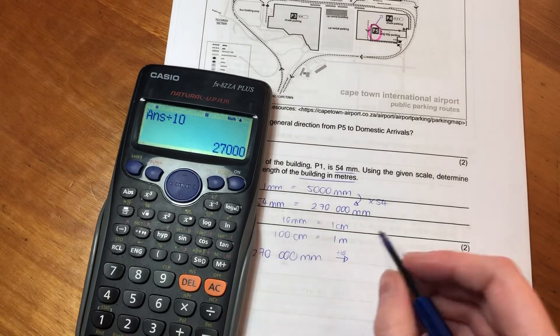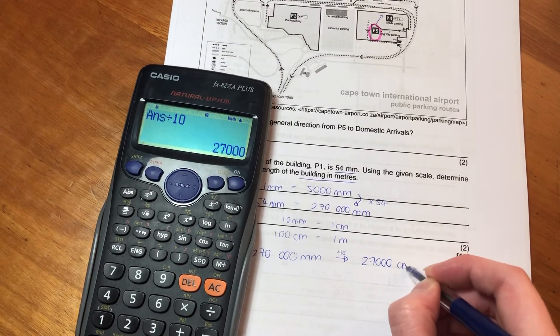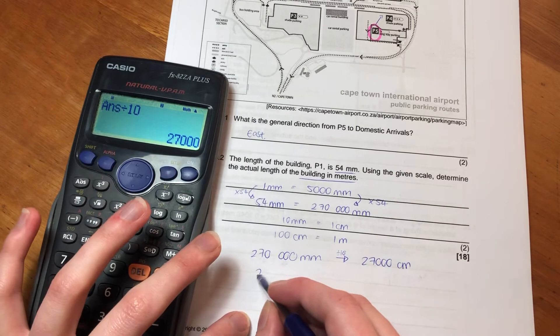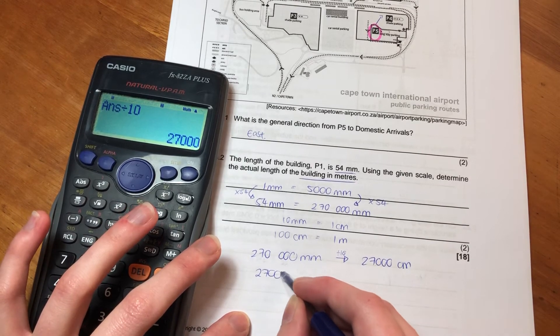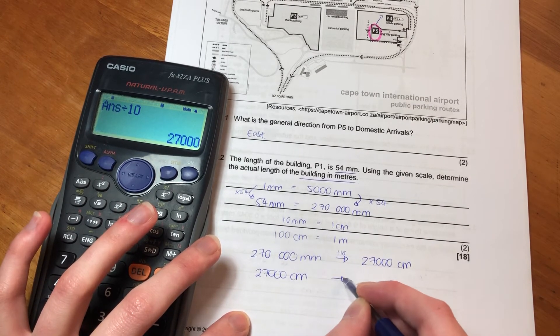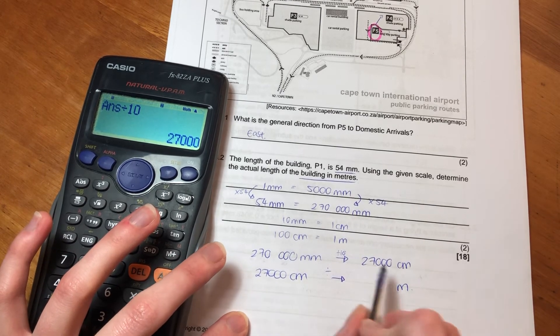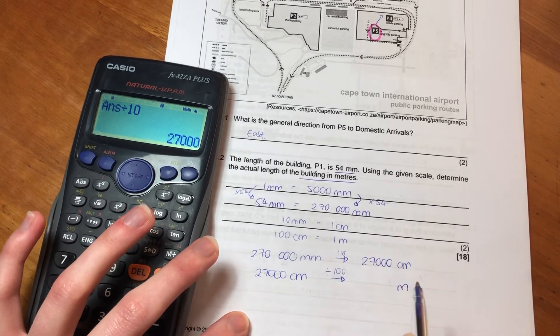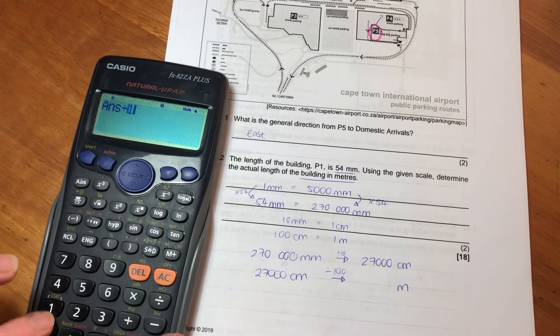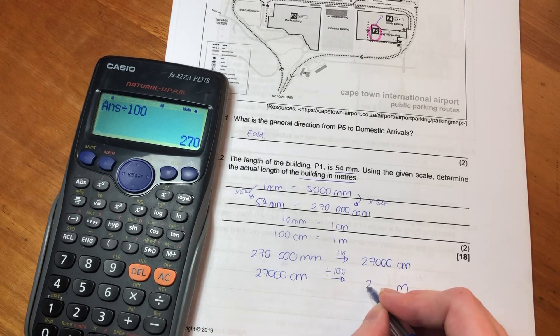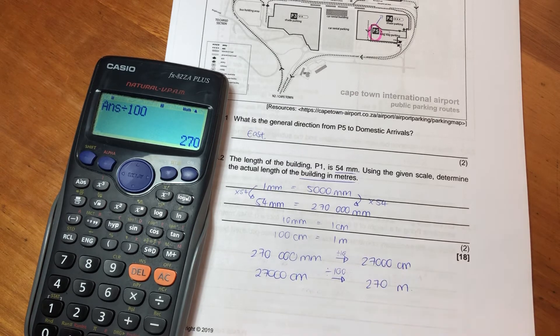And that's going to give me my number of centimeters. But they didn't ask us for our answer in centimeters, did they? They asked us for our answer in meters. So to go from centimeters to meters, we divide by 100. So we now get 270 meters.